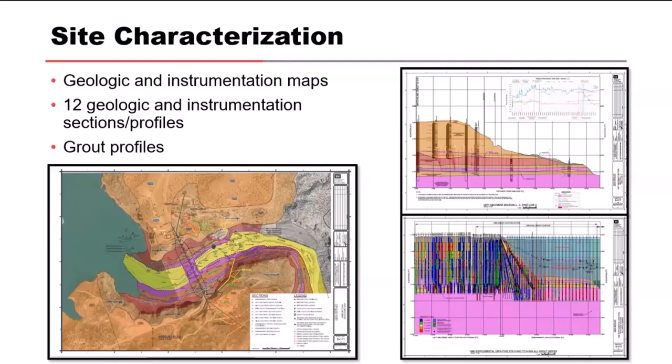The site characterization efforts included development of geologic and instrumentation maps, 12 geologic and instrumentation cross sections and profiles, and profiles of the grout data. These drawings were developed with GINT, MicroStation, and ArcGIS. We produced layered PDFs of these drawings to allow the team to view all of the data together, and then turn off layers to focus on specific types of data.